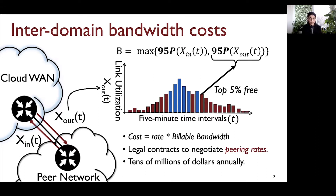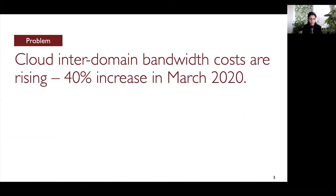Legal contracts are signed between the cloud network and the peers to resolve this peering rate. Overall, the annual cost of inter-domain bandwidth runs in tens of millions of dollars for a cloud provider. Over time, traffic demands from the cloud have risen exponentially. Specifically, as the pandemic hit and work-from-home orders were issued, demands from cloud networks saw a significant increase. This led to a 40% increase in inter-domain bandwidth costs in March 2020 alone.